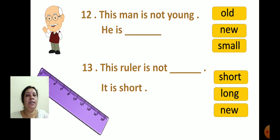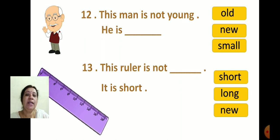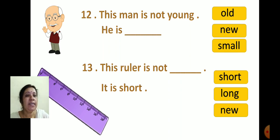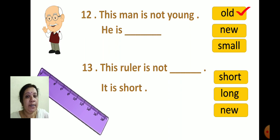Now see the picture. Read: 'This man is not young. He is dash.' Here we have to write the opposite of young. The options are Old, New, and Small. What is the opposite of young? Yes — old. So the sentence is: 'This man is not young. He is old.' I will click on old.